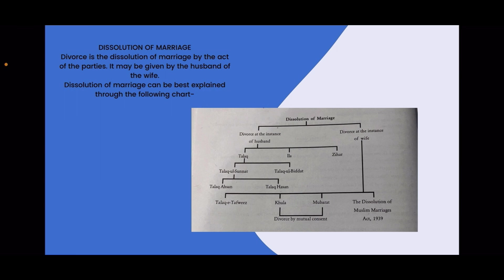Dissolution of marriage: divorce is the dissolution of marriage by the act of the parties. If death happens, it is not the act of the parties — it is an act of God. Divorce may be given by the husband or the wife. In Muslim law, the dissolution of marriage can be initiated by either party.